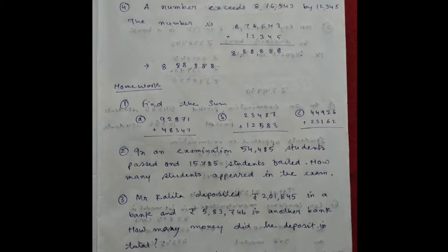7 lakh 76,543 plus 12,345 equal to 3 plus 5, 8. 4 plus 4, 8. 5, 3's are 8. 2, 6, 2's are 8. 7, 1's are 8. All are 8. So 8 lakh 88,888. Now your homework: find the sum.